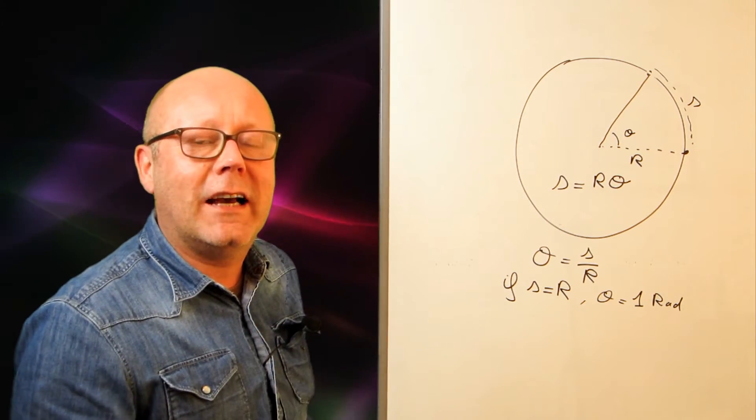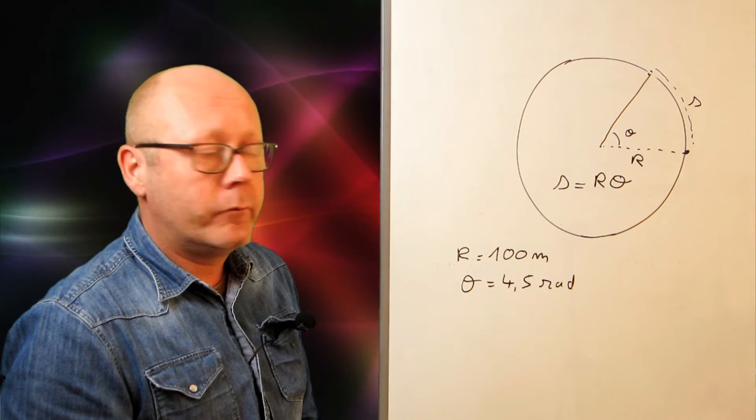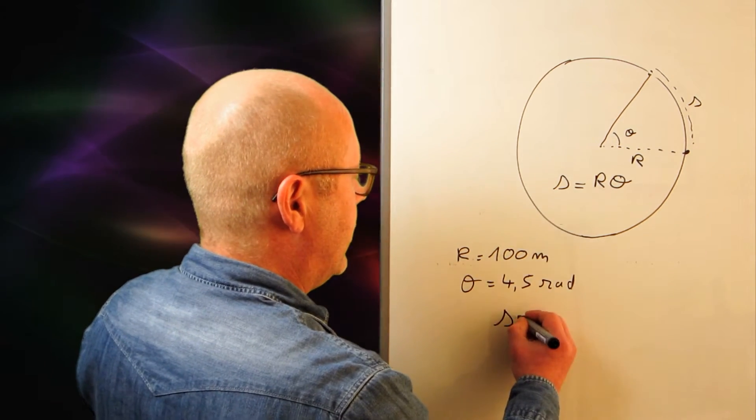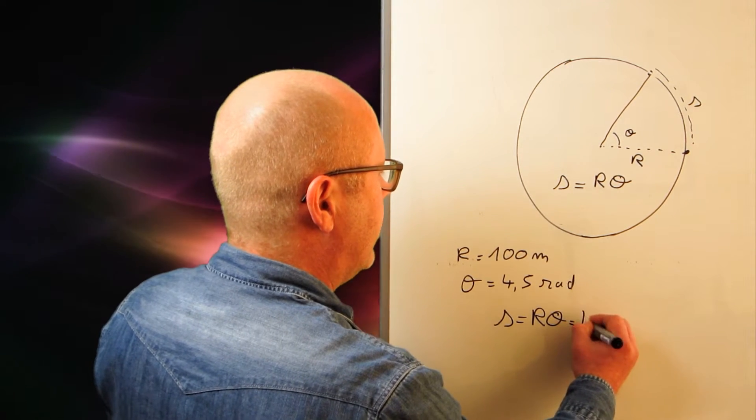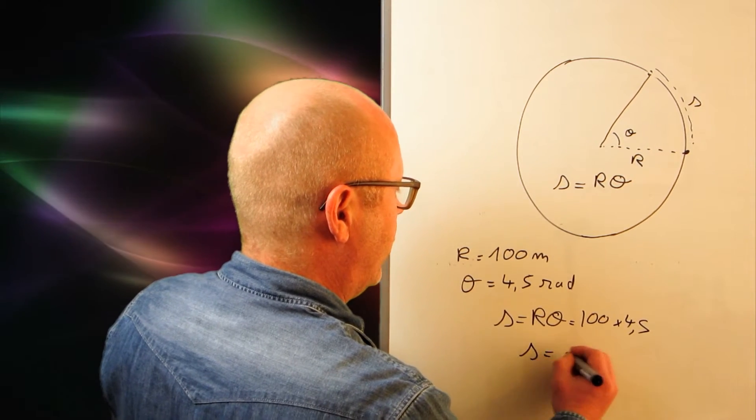Let's do an exercise. When the man is running around the track, he swept 4.5 radians. So the distance he ran was S equals R theta. That is 100 meters multiplied by 4.5 radians. So the distance he ran was 450 meters.